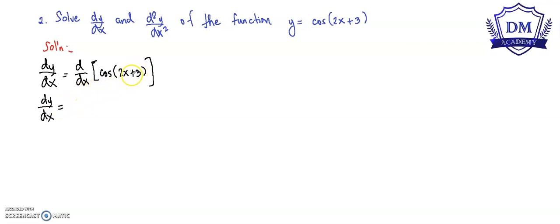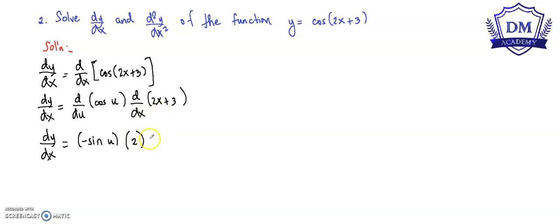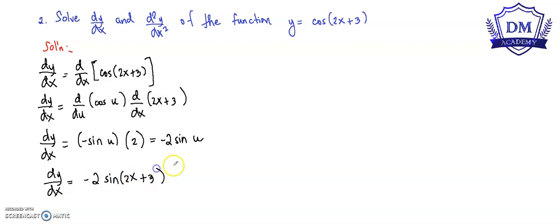We will use chain rule to solve this. That is d over du of cosine u, where we let u be equal to 2x plus 3, multiplied by d over dx of 2x plus 3. The derivative of cosine u is negative sine u, and the derivative of 2x plus 3 is 2. So dy over dx is equal to negative 2 sine of 2x plus 3.